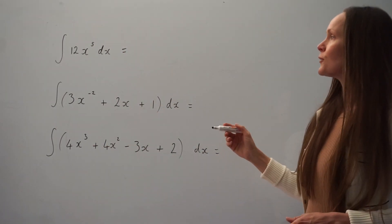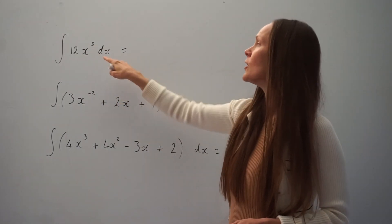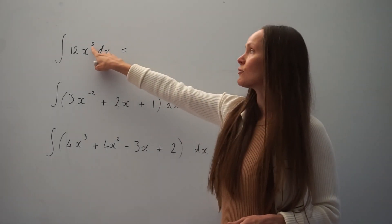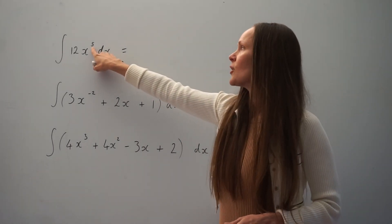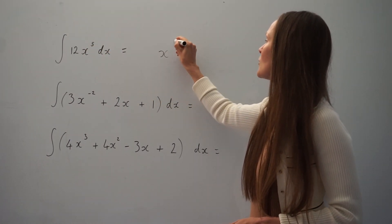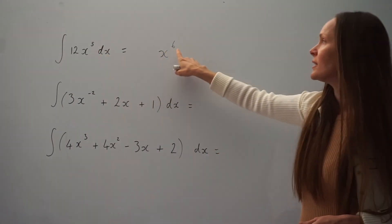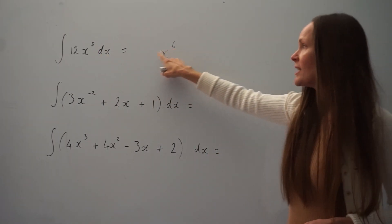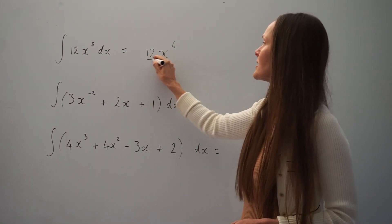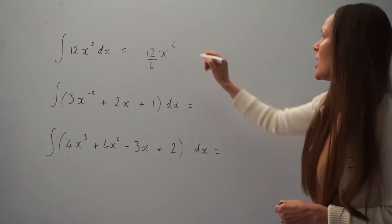In the first question we have to find the integral of 12x to the power of 5 with respect to x. We have to increase this power by one, so instead of x to the power of 5 we're going to have x to the power of 6. Then we have to divide by the new power, so we have 12 divided by 6.